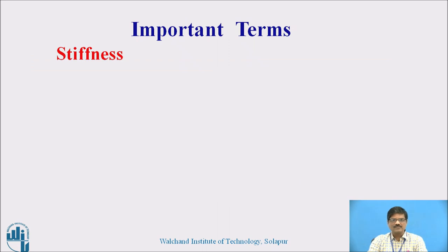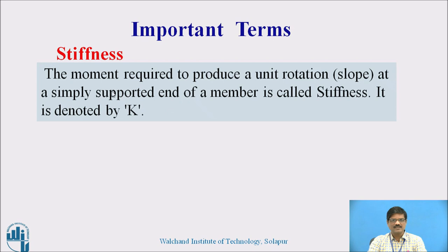Now we will look at some important terms used in this topic, such as stiffness. Stiffness is nothing but the moment required to produce a unit rotation or slope at a simply supported end of a member, and it is denoted by the symbol K.